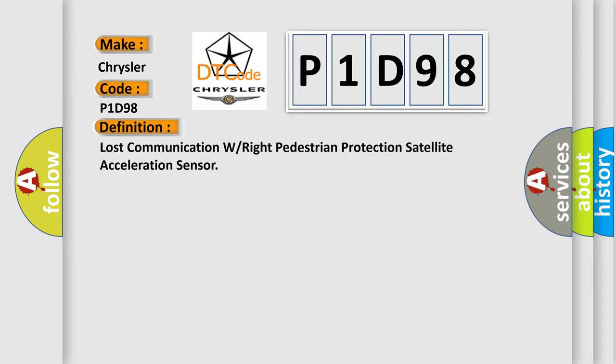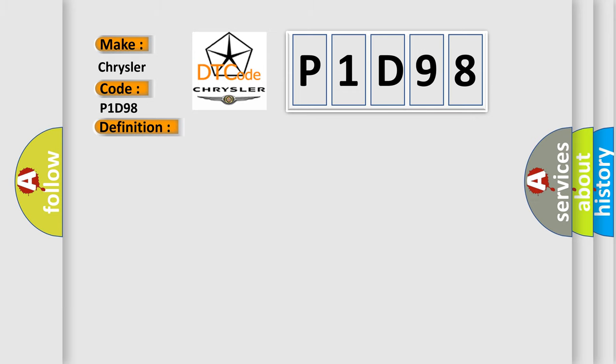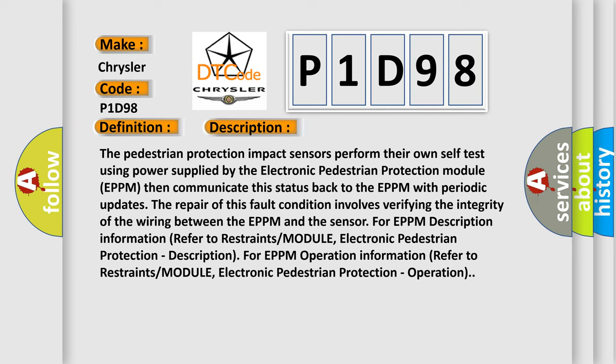Lost communication with the right pedestrian protection satellite acceleration sensor. The pedestrian protection impact sensors perform their own self-test using power supplied by the Electronic Pedestrian Protection Module (EPPM). The EPPM then communicates this status back with periodic updates. The repair of this fault condition involves verifying the integrity of the wiring between the EPPM and the sensor. For further information, refer to the restraints module electronic pedestrian protection description and EPPM operation.